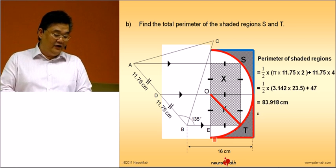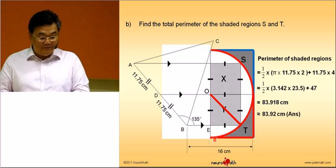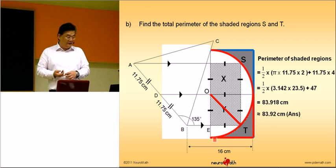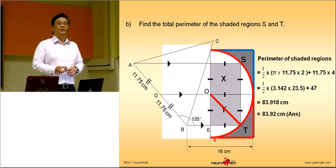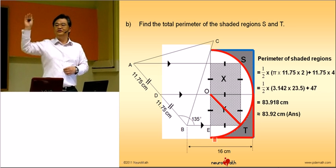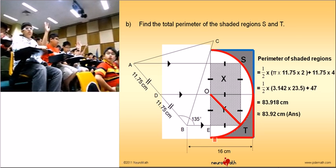And therefore, the answer nearest two decimal places will be 83.92. Once again, who gets this question correct? Wonderful!